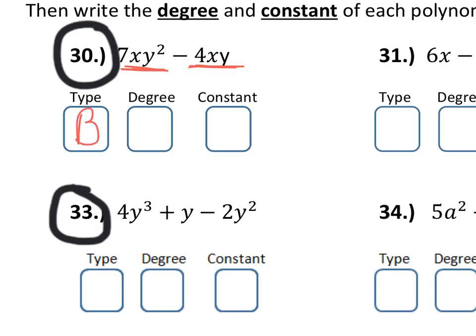The degree is dependent on this exponent here. So, since that is a squared term, it is a second degree. And the constant is a number with no variables attached to it. Since we don't see any of those, our constant is 0.